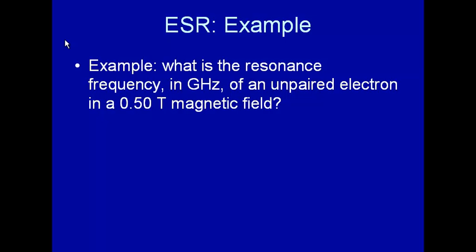Let's do an example to use the equations that describe electron spin resonance. What is the resonance frequency in gigahertz of an unpaired electron in a 0.5 tesla magnetic field?